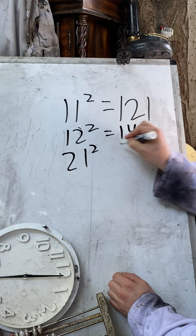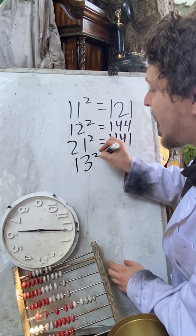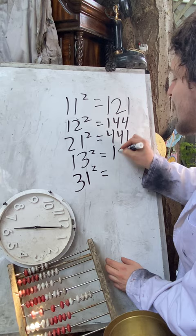We can even do the same thing with 13 and 13 backwards, 31, where if we square each of those, their results are each other backwards.